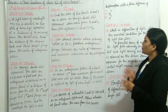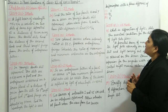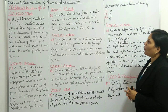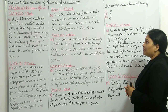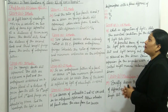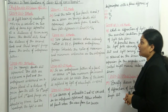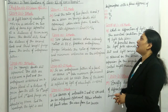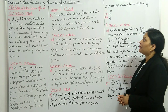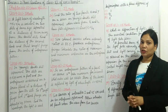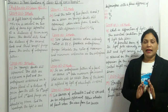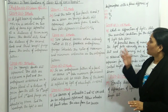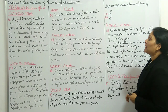Question number fifteen: in Young's double slit experiment, we are given that the path difference from S1 and S2 is 0 and lambda by 4.